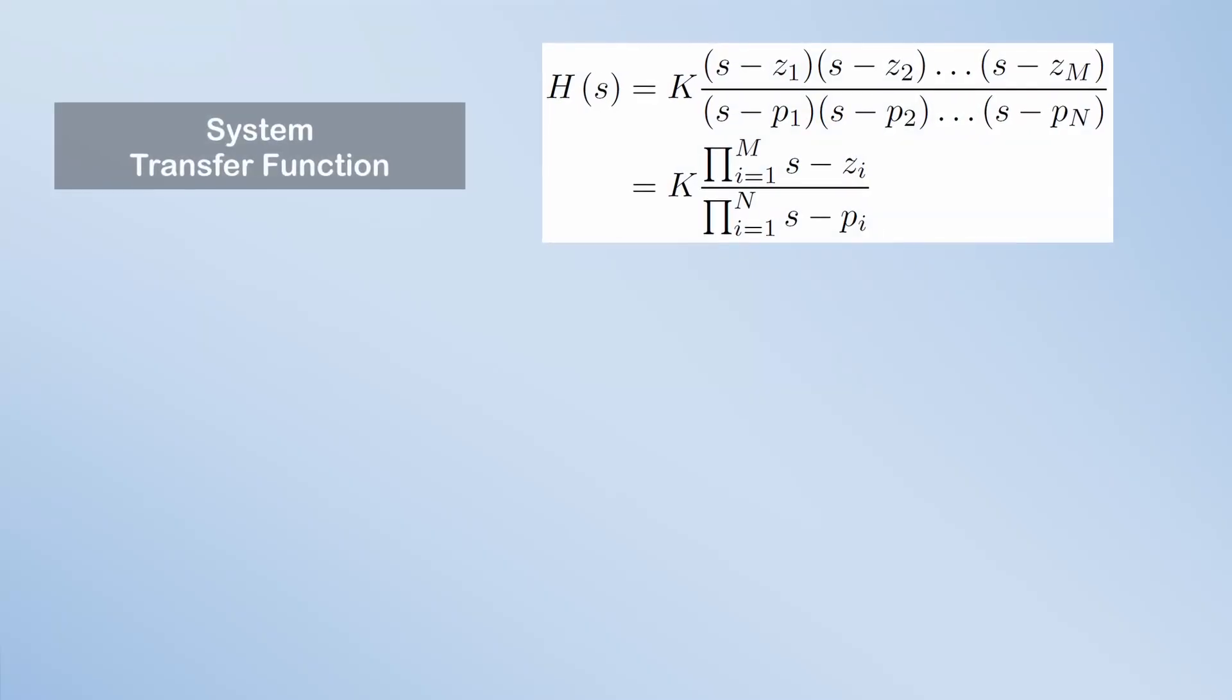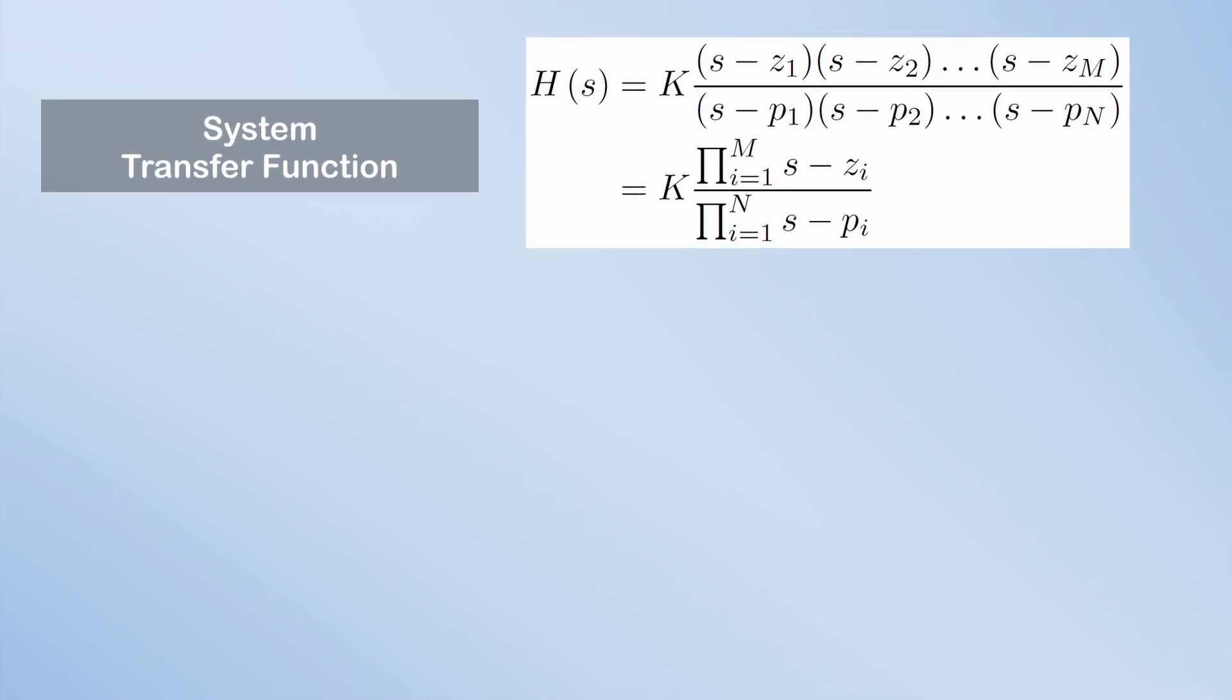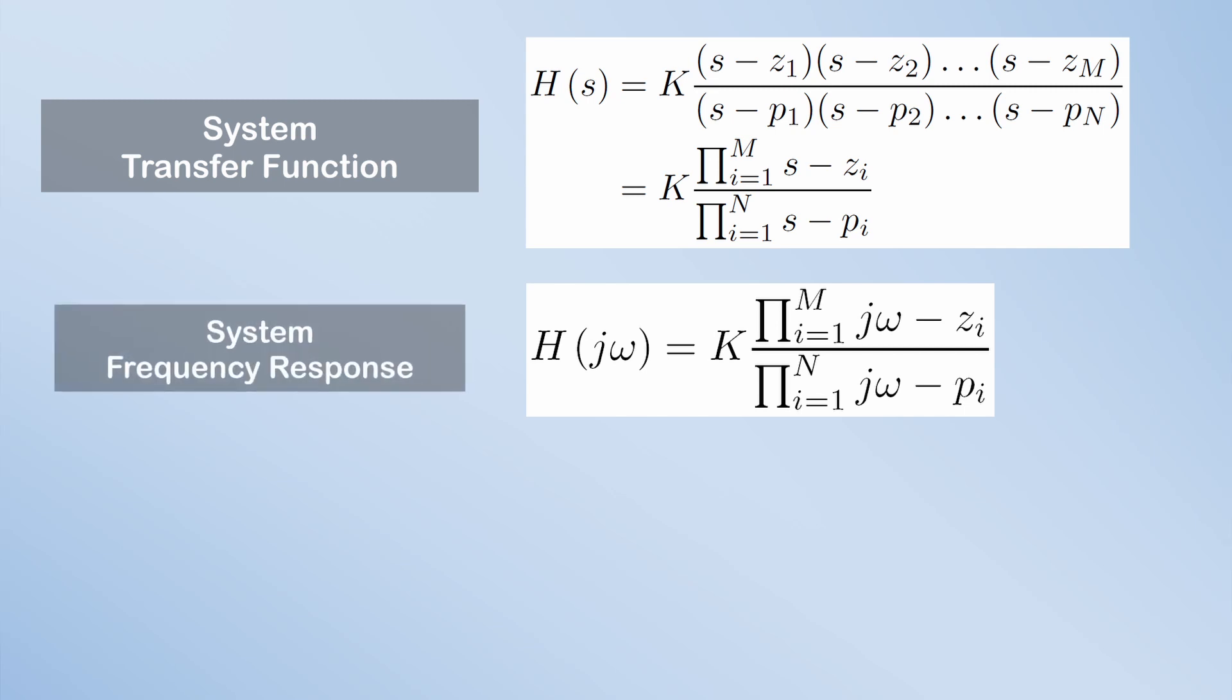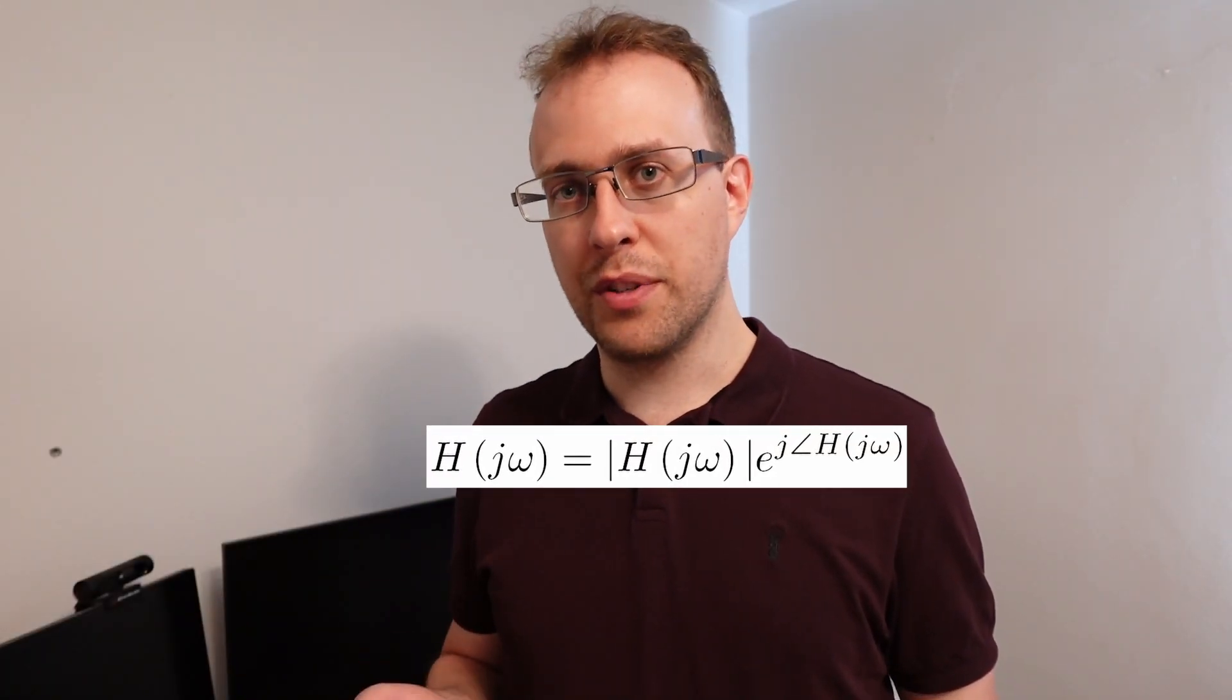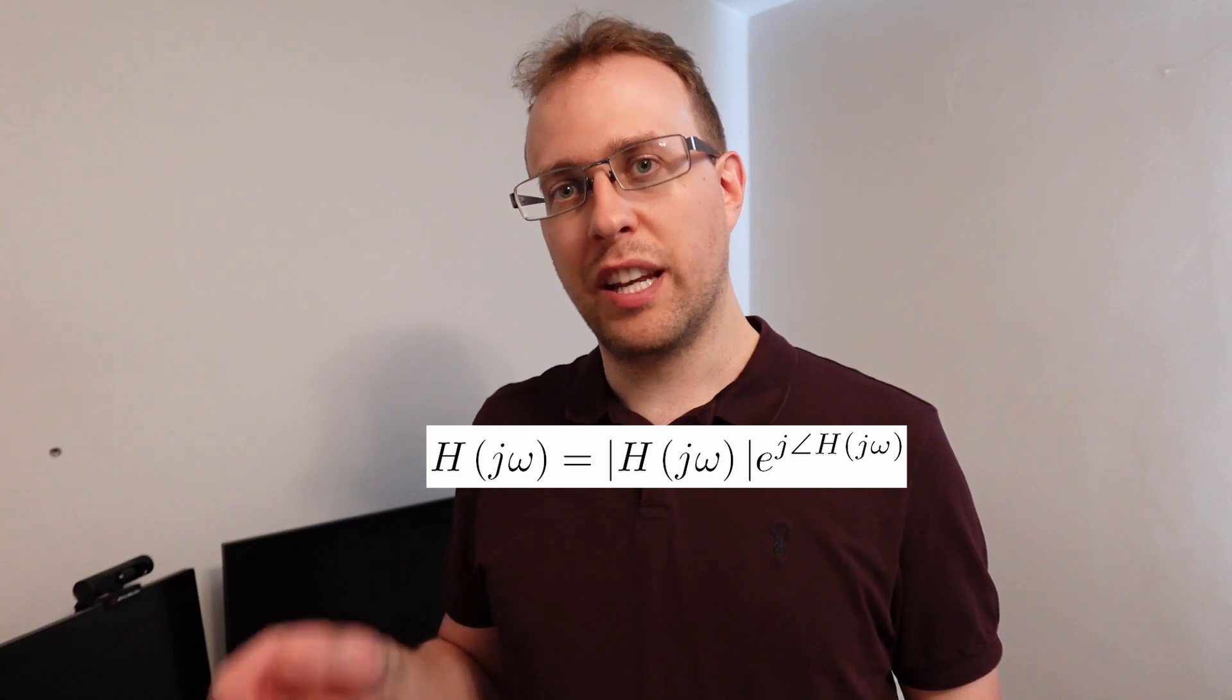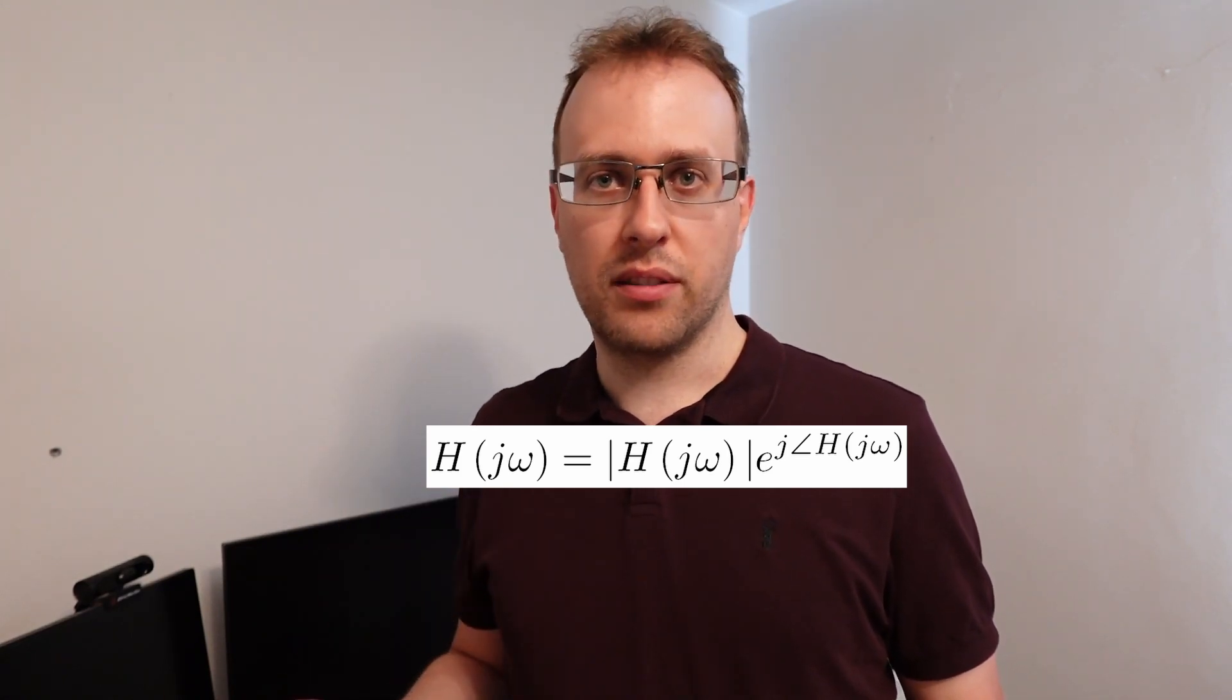If you take this back to looking at systems, we can rewrite H of S, the system transfer function, as H of j omega, where we then replace all the S's in the transfer function with j times omegas. This is now the system frequency response, and we can calculate its magnitude and phase at a particular frequency to see how it would convert an input signal into an output signal.